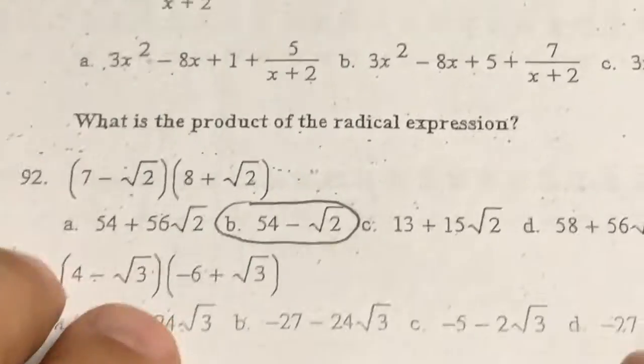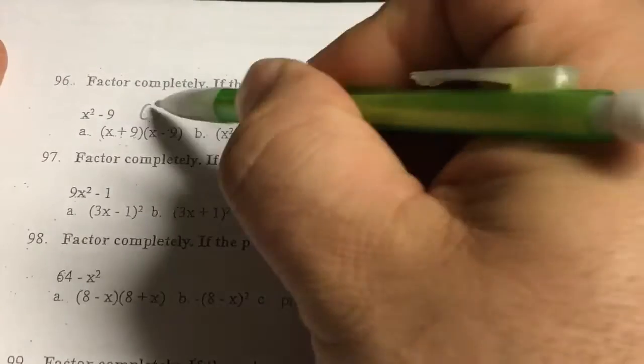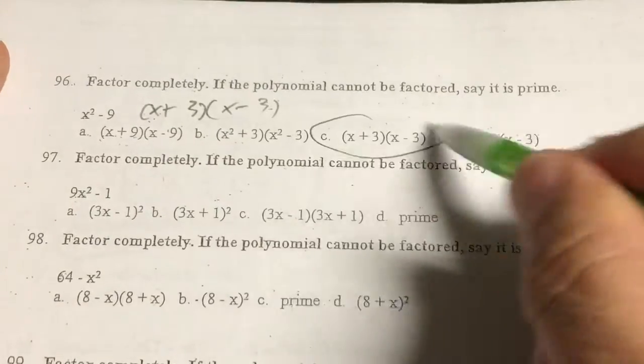You can practice with the other ones. The answers are on the back. Factory. Parentheses, x plus 3, x minus 3. Choice C.